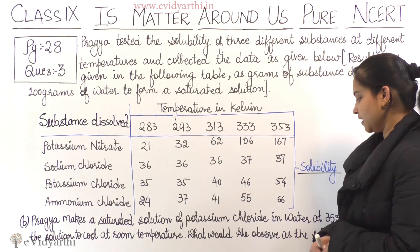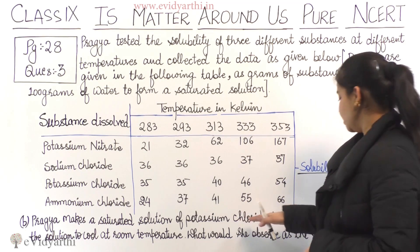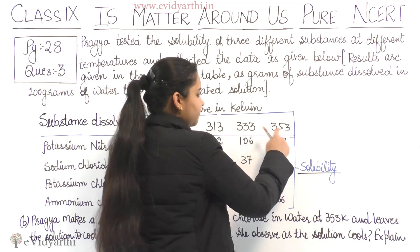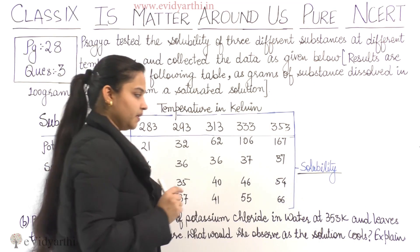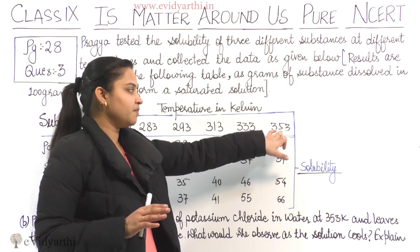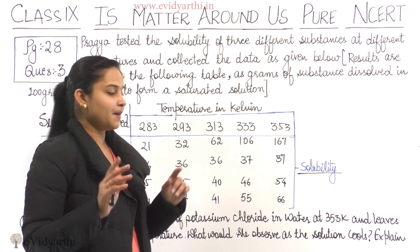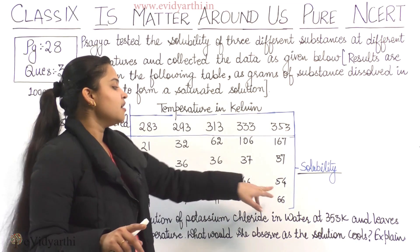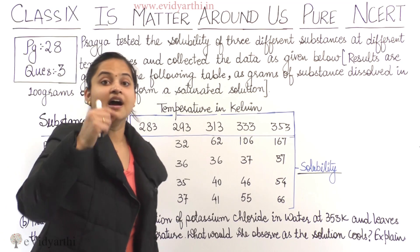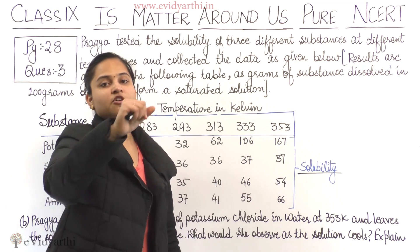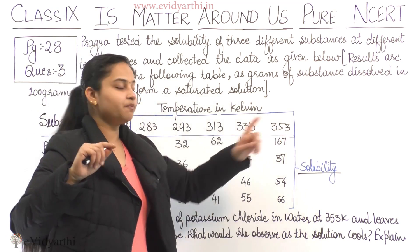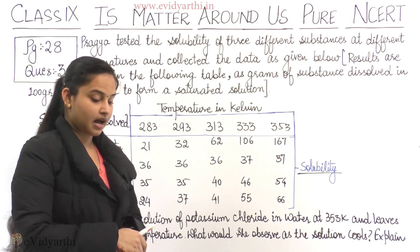Pragya made a saturated solution of potassium chloride in water at 353 Kelvin — that means she dissolved 54 grams of potassium chloride in 100 grams of water at 353 Kelvin to get a saturated solution. Then she left the solution to cool.